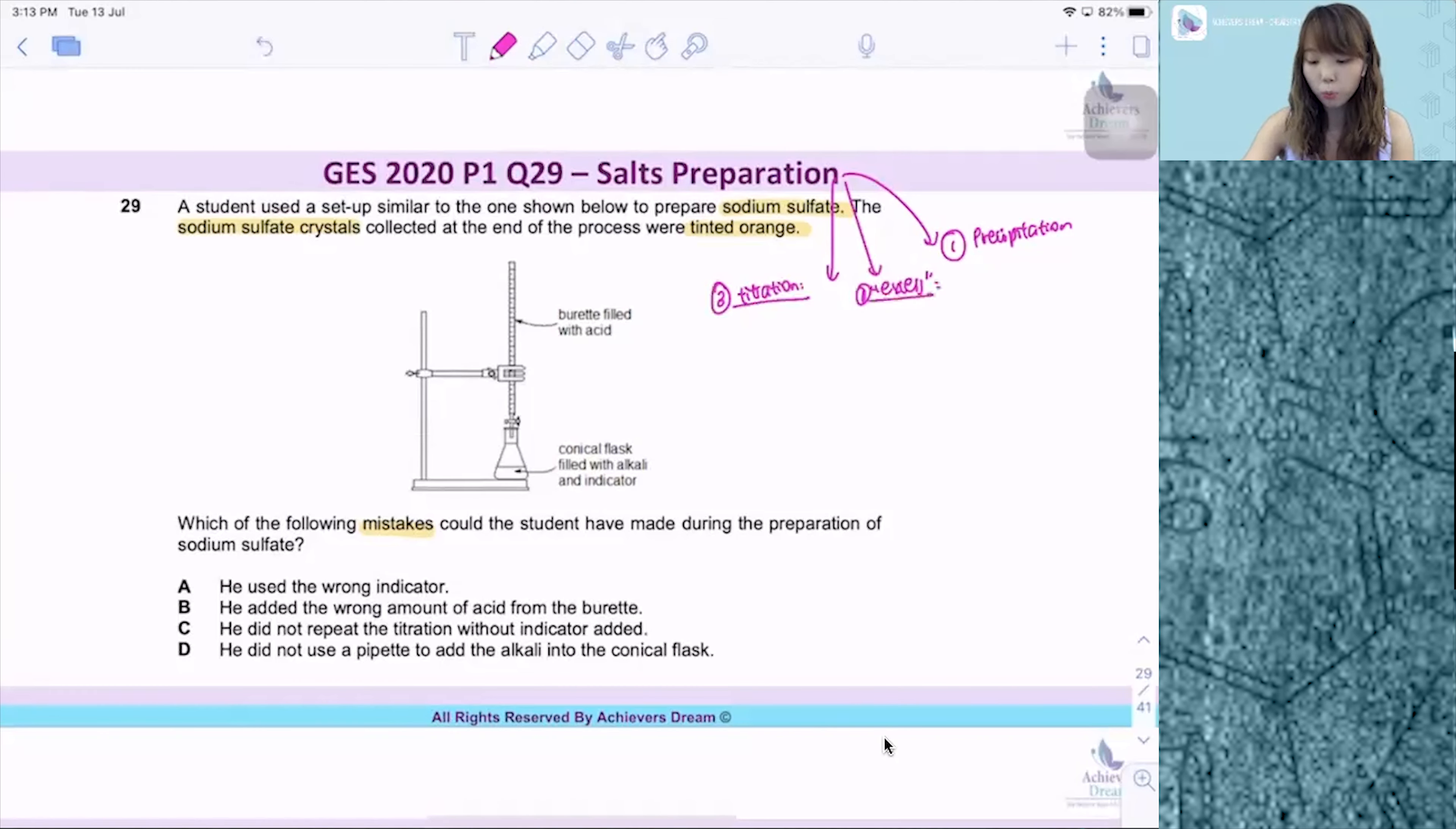So when do we use which method? Precipitation is used to produce insoluble salts. For excess method, it is used to produce soluble non-A1 salt. So what does A1 stand for? The A stands for ammonium compounds, and the 1 stands for group 1 compounds. So any soluble salt that is not ammonium, not group 1 compound, we use excess.